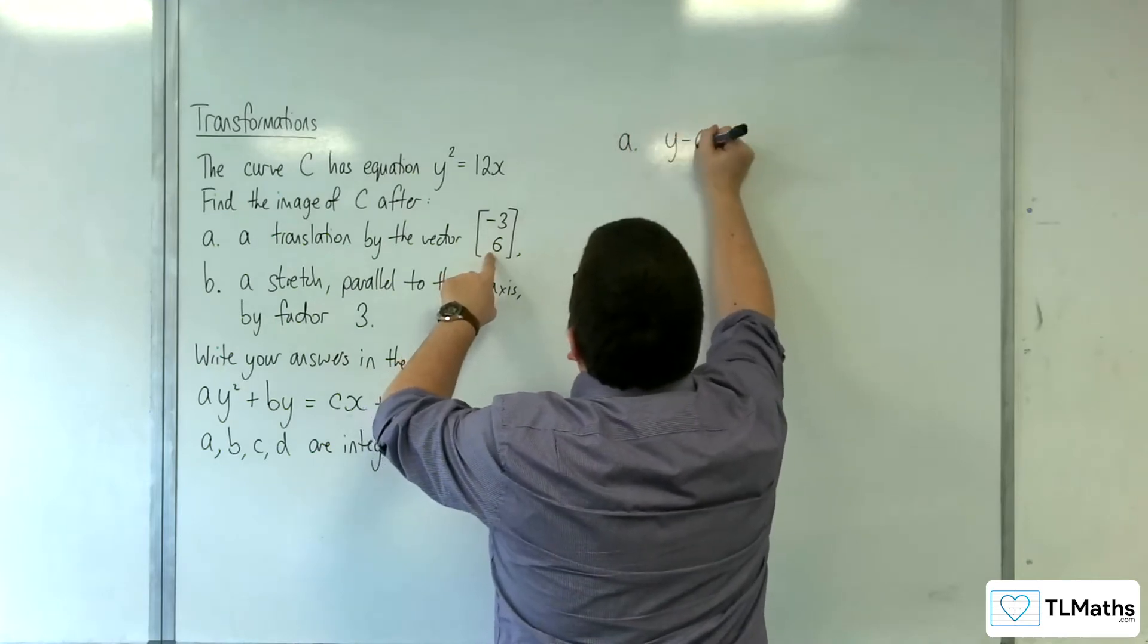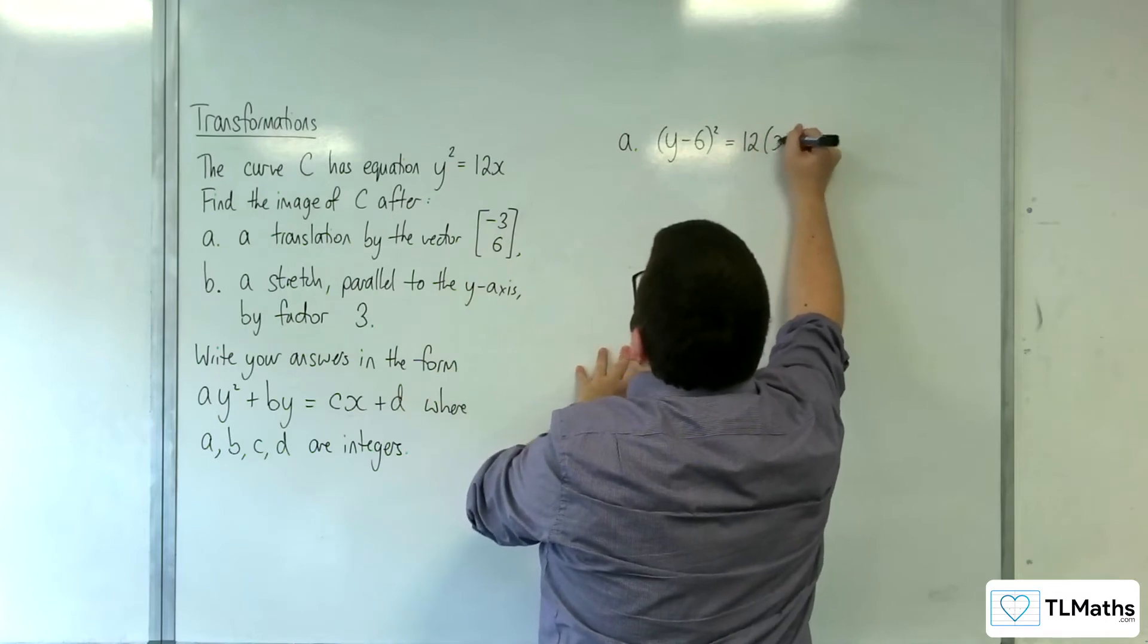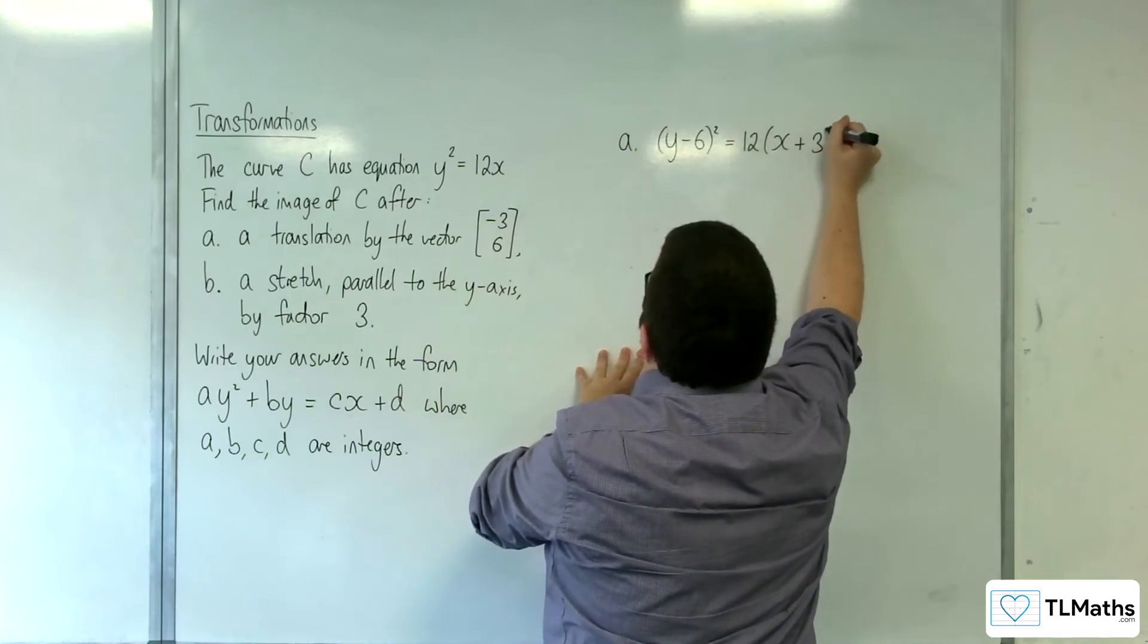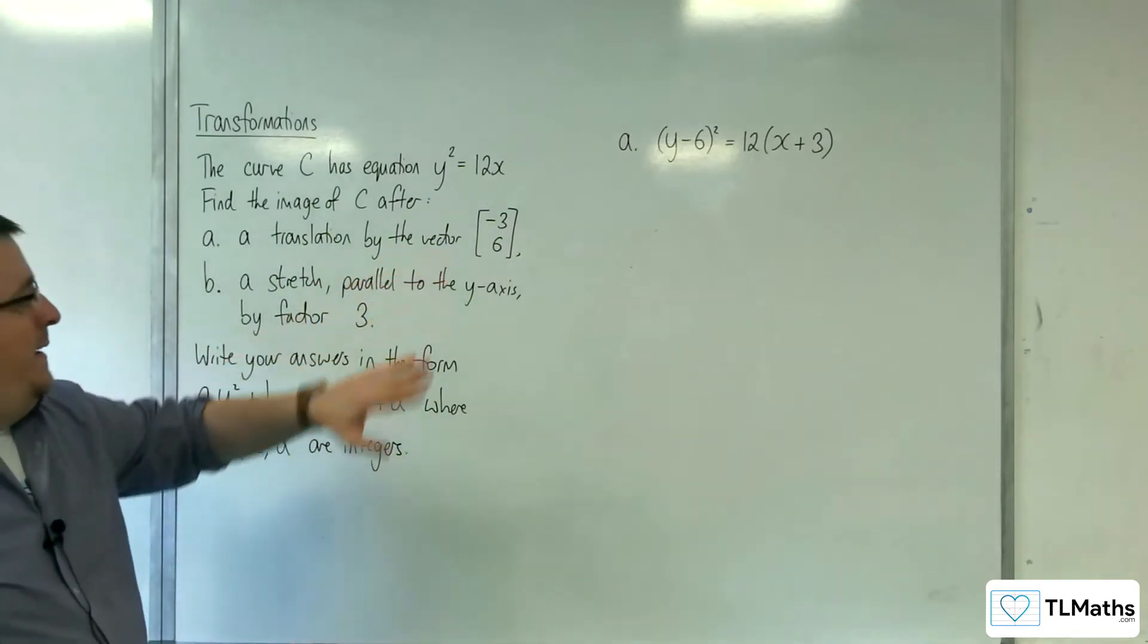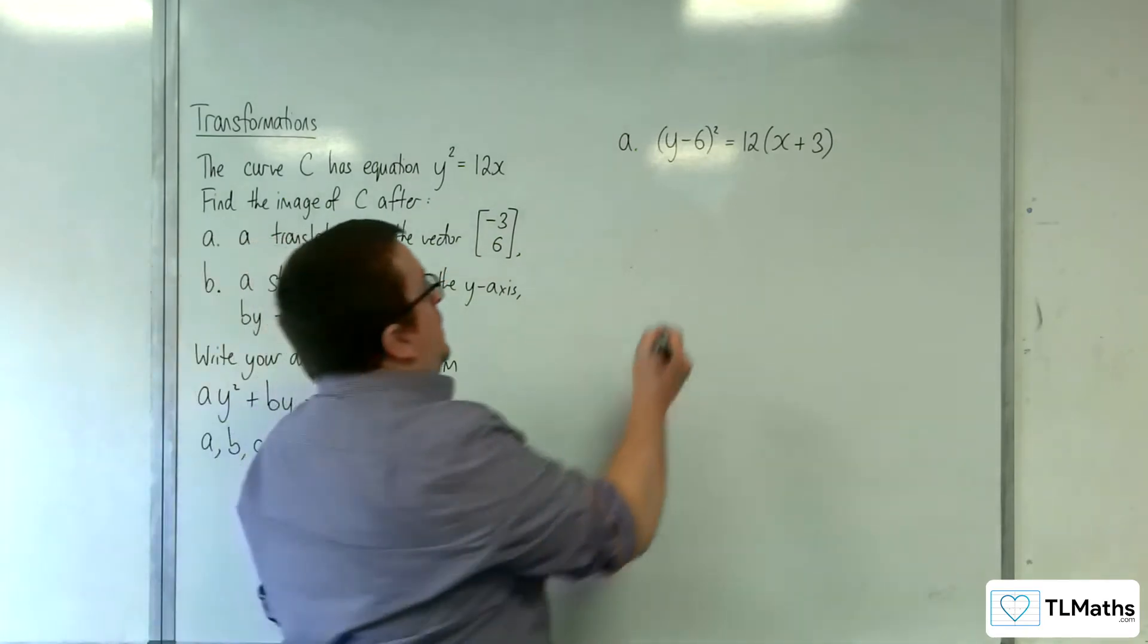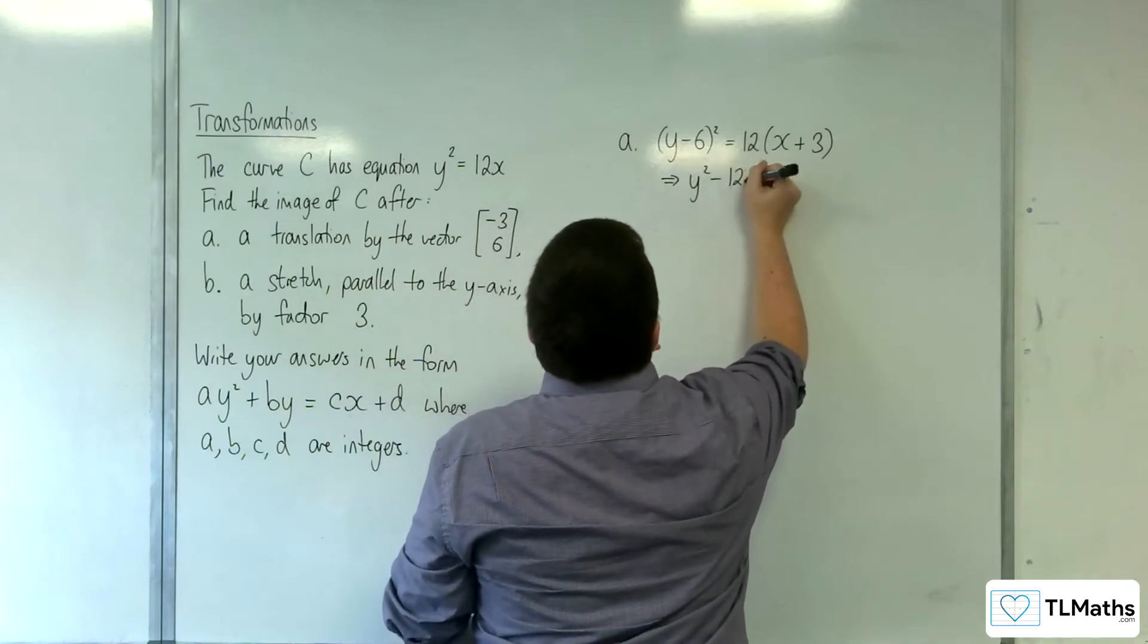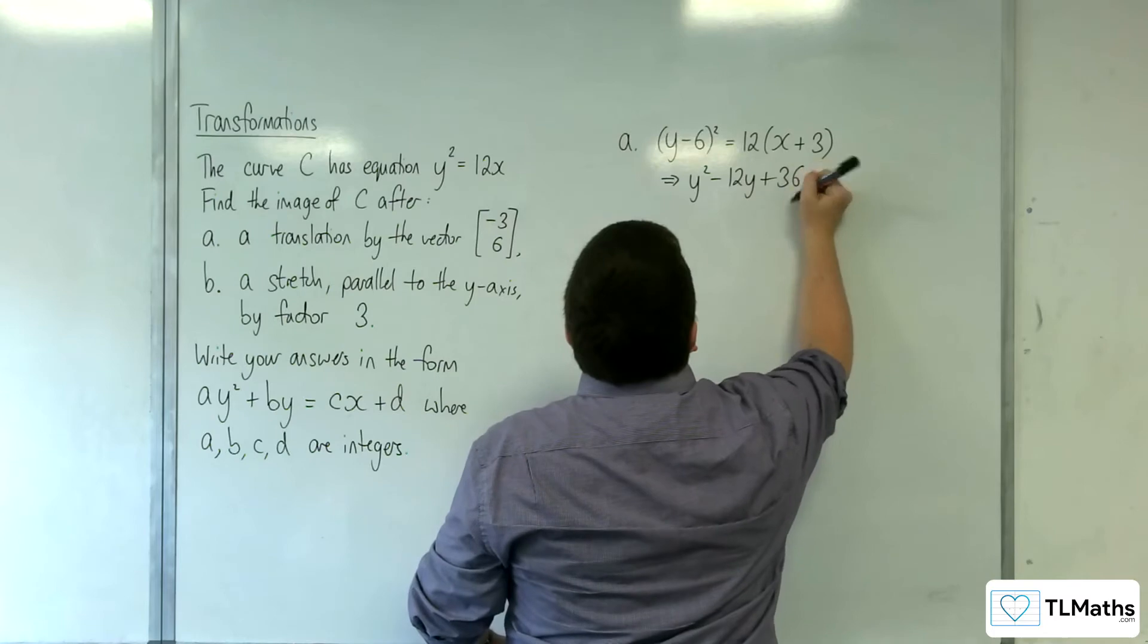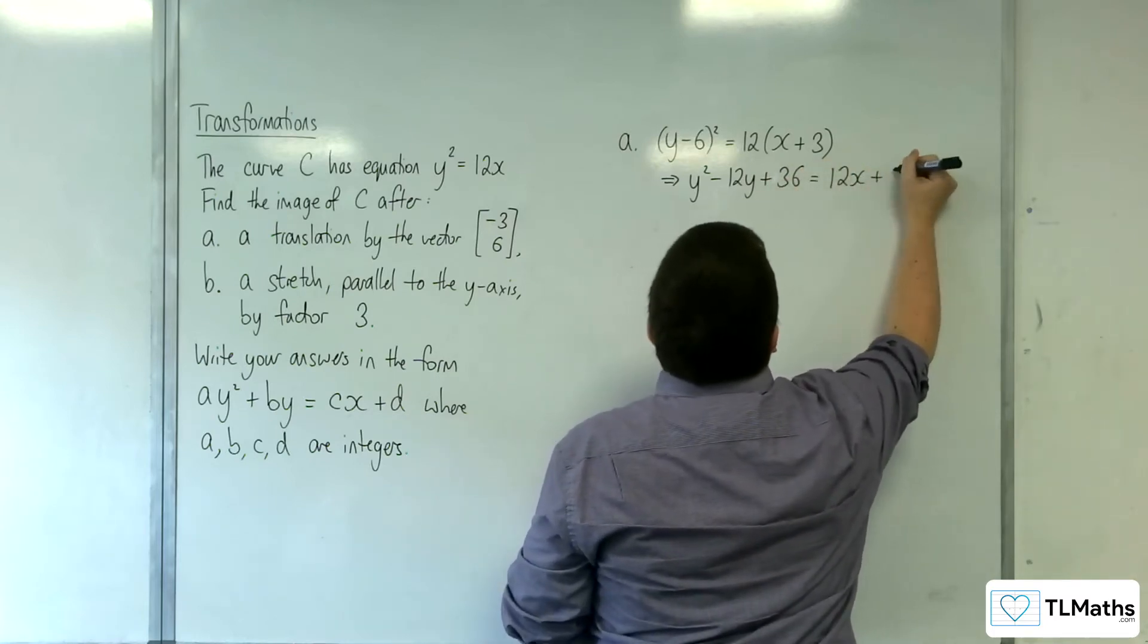We need to expand that out to get it into the form they want. So y² - 12y + 36 = 12x + 36.